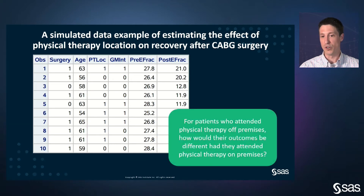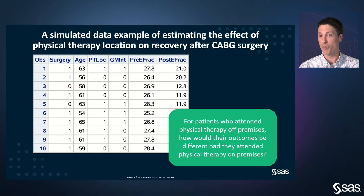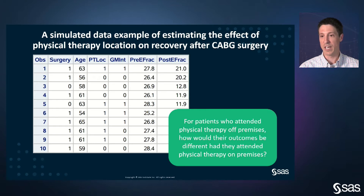Here is the specific research question: for patients who attended physical therapy off-premises, how would their outcome be different if they had attended physical therapy on-premises? There are two things to notice. First, we are interested in the causal effect in a particular subgroup — patients who choose physical therapy off-premises. Second, the research question involves a counterfactual quantity: what would have happened to these patients if they had made a different choice? You can think of a causal analysis as a framework that combines the data you have with assumptions about the data generating process to address such counterfactual queries.